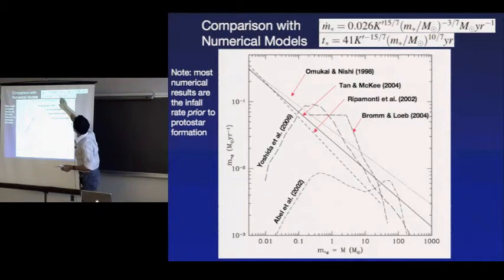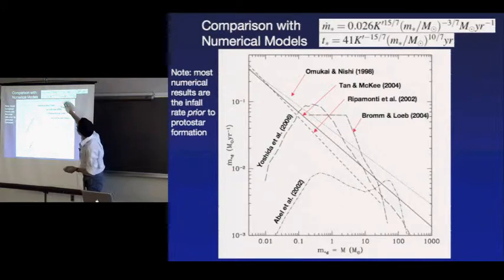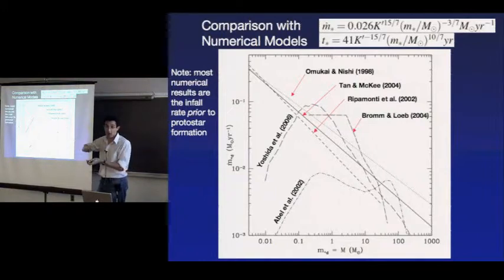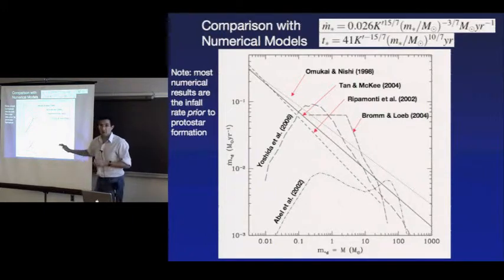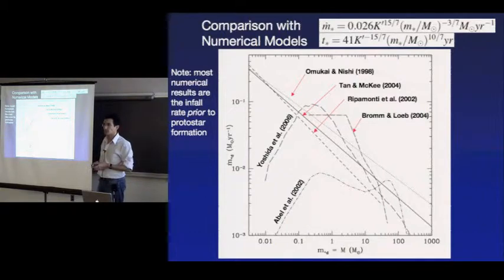One limit to the process is the main sequence lifetime, which at high masses asymptotes to about 3 million years. With this kind of accretion rate you could in principle get to about 2,000 solar masses. O'Shea and Norman have found that when they measure the infall rate from cores as a function of redshift across 12 halos, those at higher redshift have smaller accretion rates than those at lower redshift — because higher-redshift halos had more residual free electrons, catalyzing a larger amount of H2, cooling the gas more efficiently and reducing the entropy parameter K'. There's a range of K' of probably a factor of five or six from redshift 30 to 20.